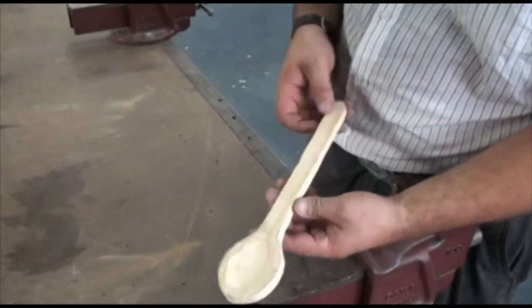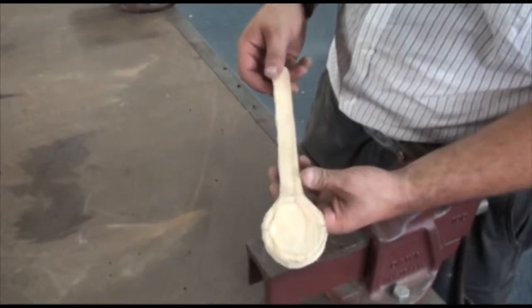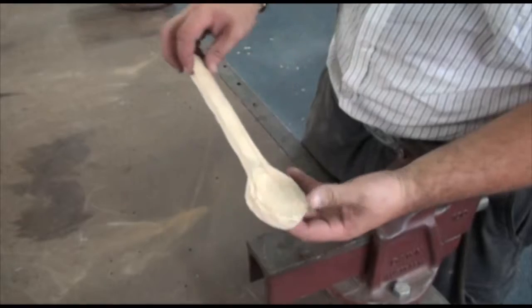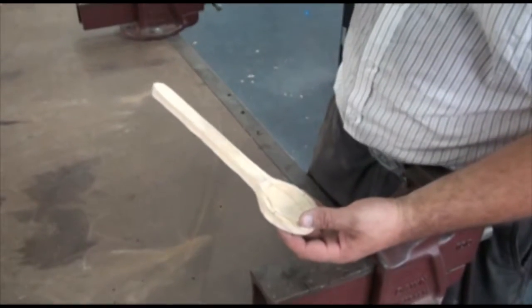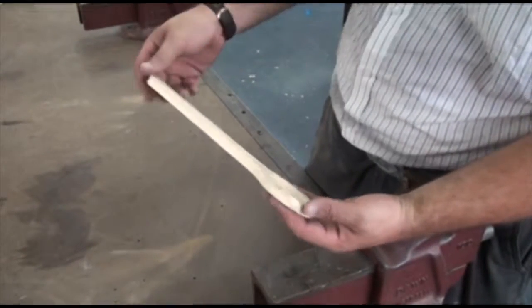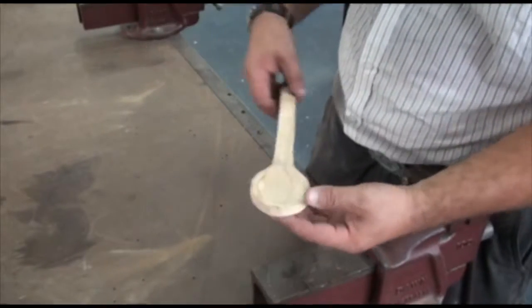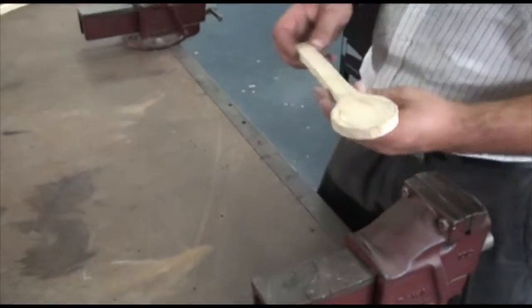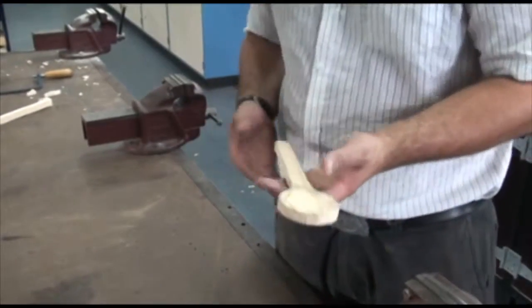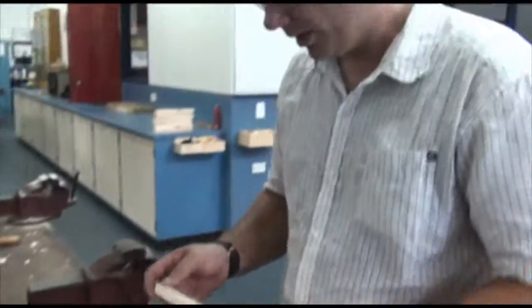You now should be able to see the rough outline of the spoon. It's now ready for me to use the rasp on it to get it nice and round. If I was going to sand this now, it would take me a lot of time to get this smooth. So the rasp is going to save you a heck of a lot of effort.